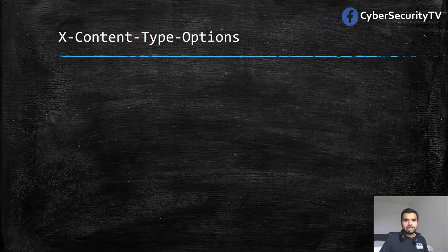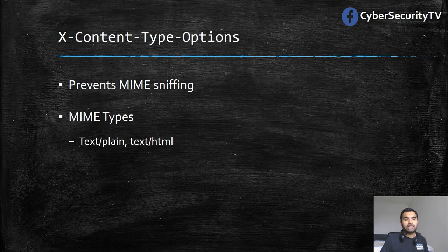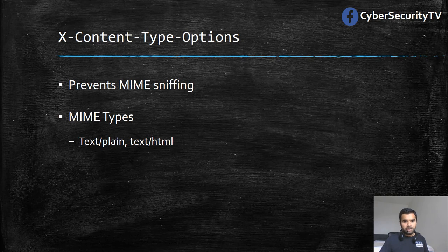Let's move on to the second header: X-Content-Type-Options. There's a lot of misconception around this header — some think it does not provide any protection. It prevents MIME sniffing attacks. To understand that, we first need to understand what a MIME type is. When you do a pen test or look at response headers, you'll see the content type — things like text/plain, text/html, JSON, etc. Those are the MIME types.